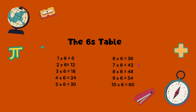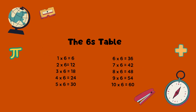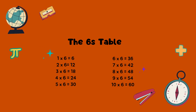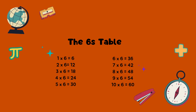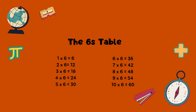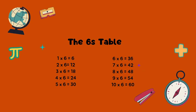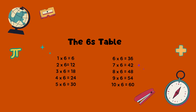Six times six equals thirty-six. Seven times six equals forty-two. Eight times six equals forty-eight. Nine times six equals fifty-four. Ten times six equals sixty.